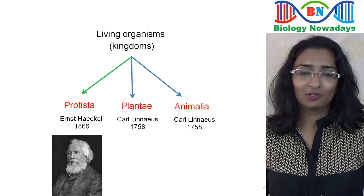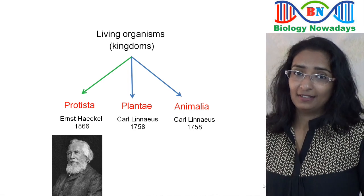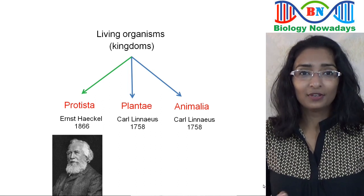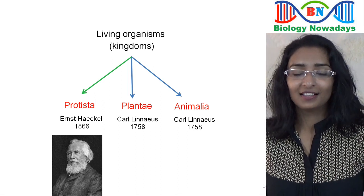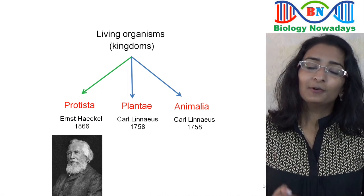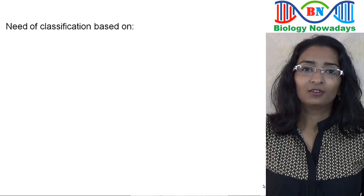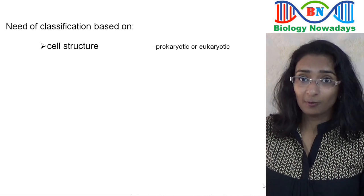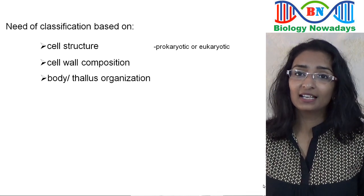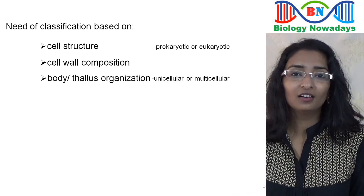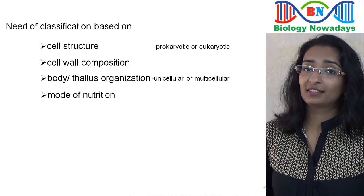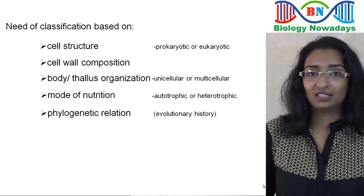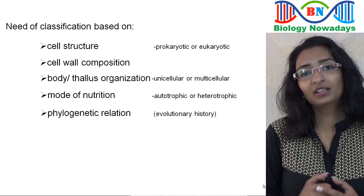Later, in the middle of the 20th century, electron microscopes were developed which are capable of much higher magnifications than light microscopes. This revealed the structure of each cell organelle in detail. So there was a need for a newer classification system based on: cell structure (whether prokaryotic or eukaryotic), cell wall composition, body or thallus organization (whether unicellular or multicellular), mode of nutrition (whether autotrophic or heterotrophic), and also based on phylogenetic relation — that is, the evolutionary history of an organism.